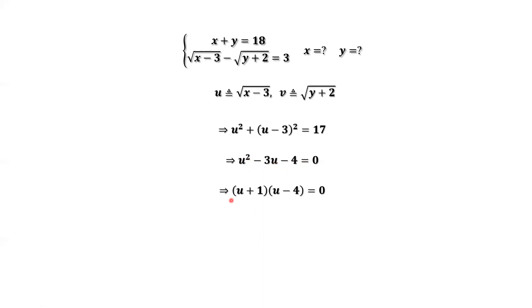u plus 1 times u minus 4 equals 0. We have two solutions: u equals negative 1 or u equals positive 4.